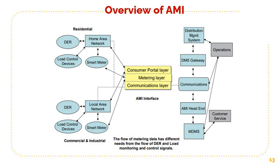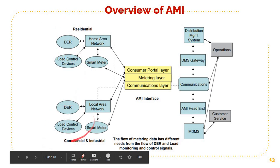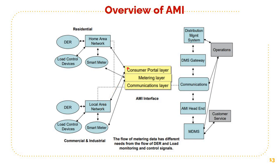This is an overview of AMI. What you see here is the residential, commercial, and industrial smart meters, and their associated home area network or local area network, which continuously communicates with different layers of the AMI — the consumer portal layer, metering layer, and communication layer. These LANs and HANs can communicate to the consumer portal layer or metering layer. The communication layer directly communicates to the MDMS through a communication channel, and this data can be used for various analyses, billing, providing feedback to customers, and operations.